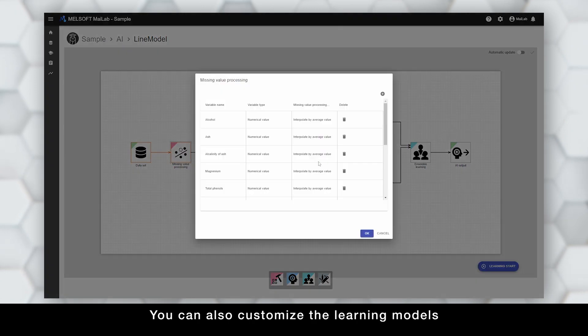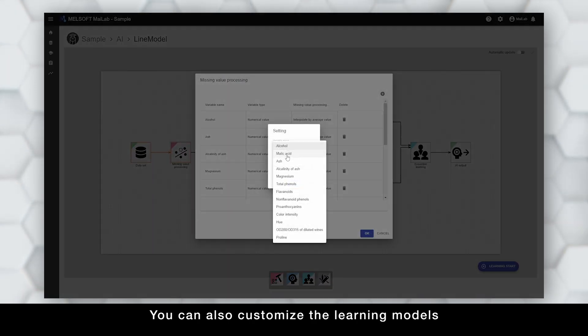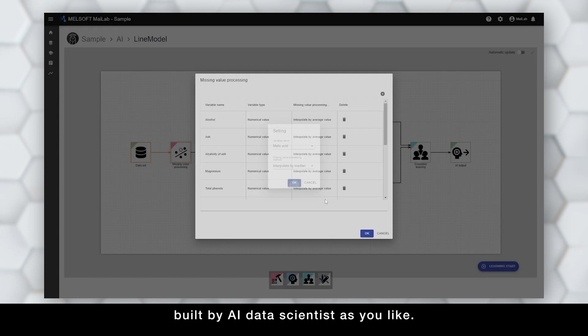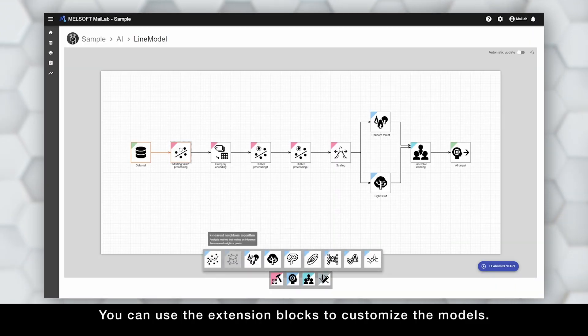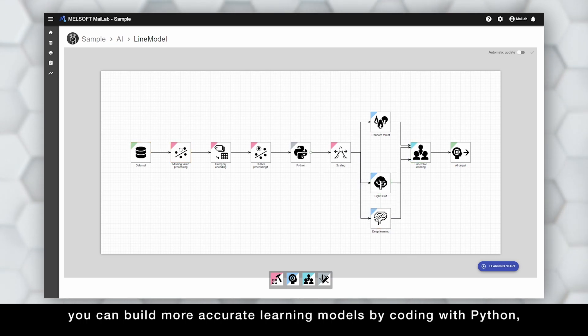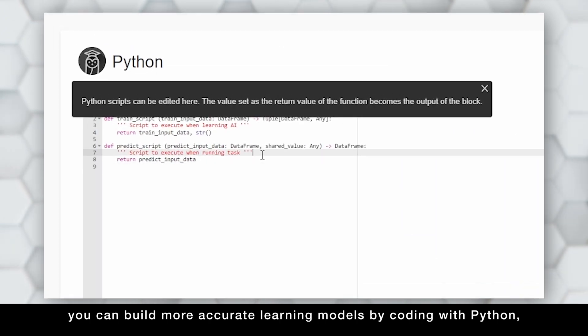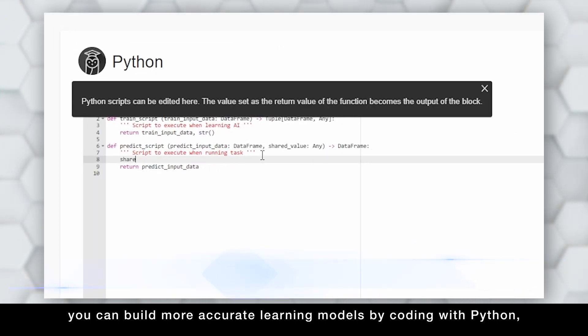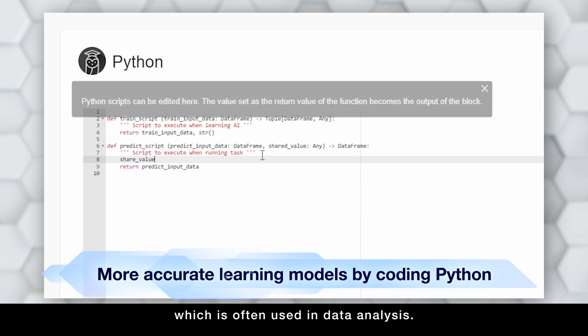You can also customize the learning models built by AI Data Scientist as you like. You can use the extension blocks to customize the models. In addition, if you would like to program by yourself, you can build more accurate learning models by coding with Python, which is often used in data analysis.